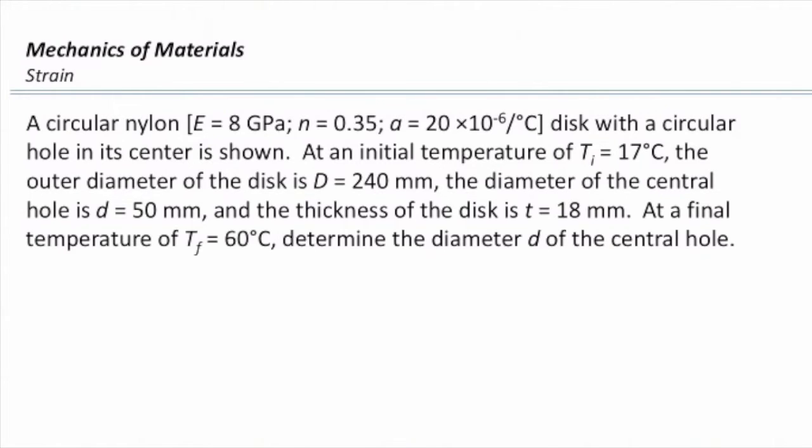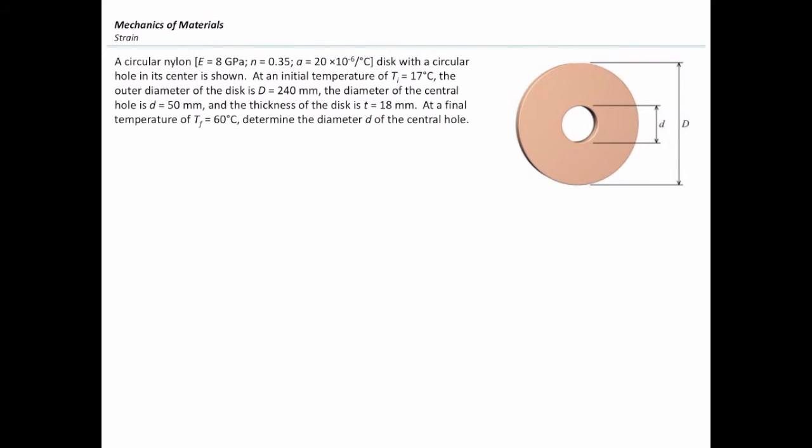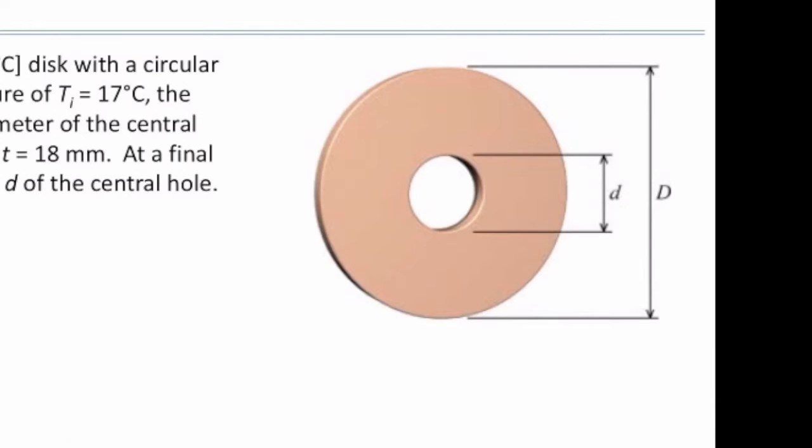The question asks, at a final temperature of 60 degrees centigrade, determine the diameter of the central hole. So what happens if I increase temperature from 17 to 60? Do you expect to see expansion in this disk? An increment in the diameter of the inner hole as well as the outer diameter of this disk. And how can I determine that? Let me do that step by step.